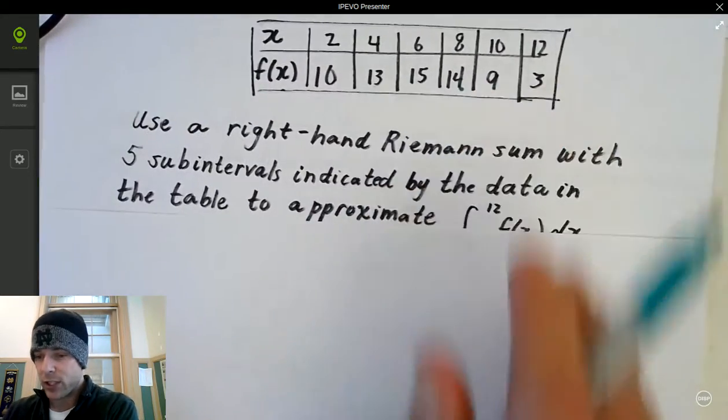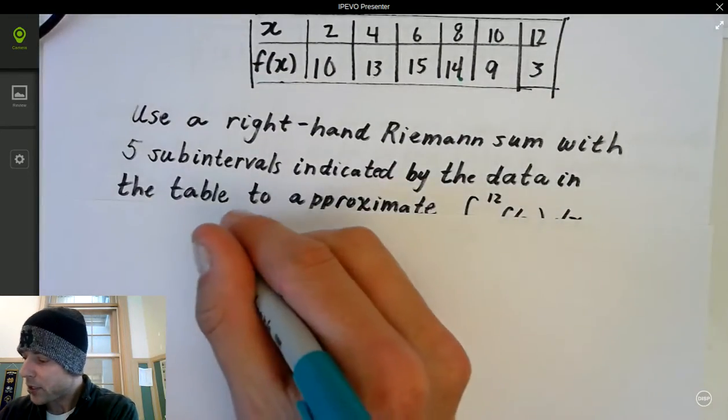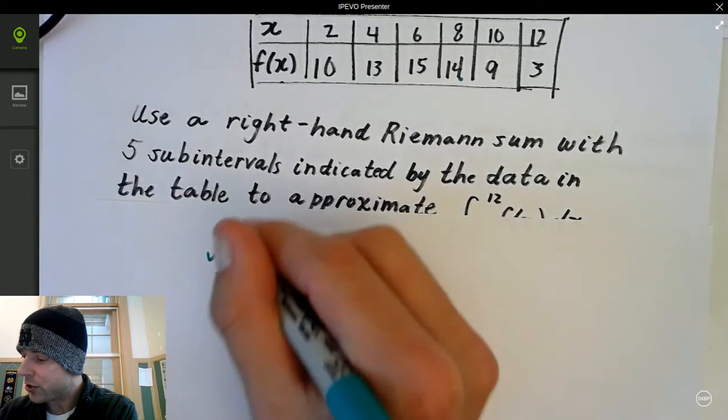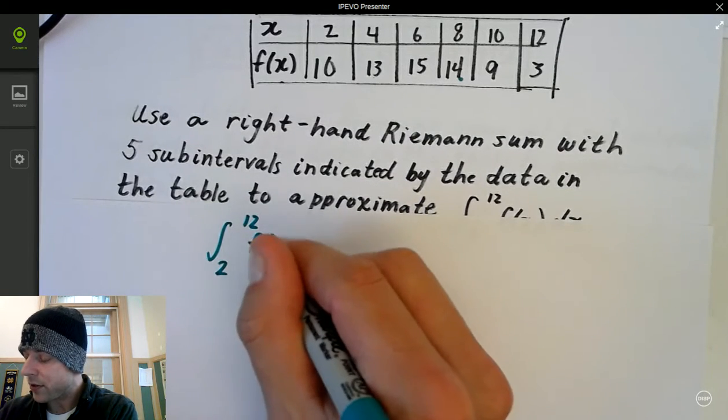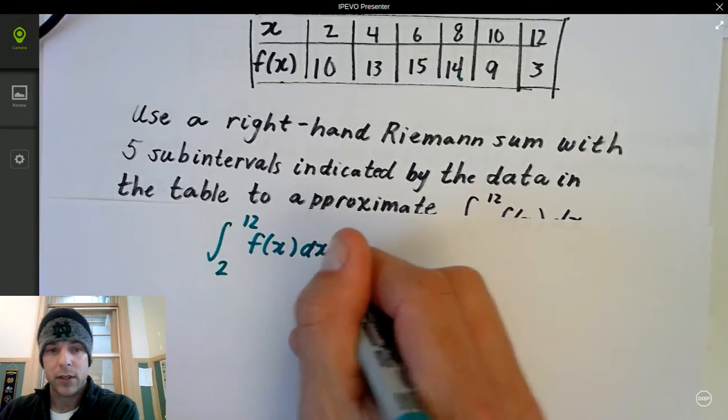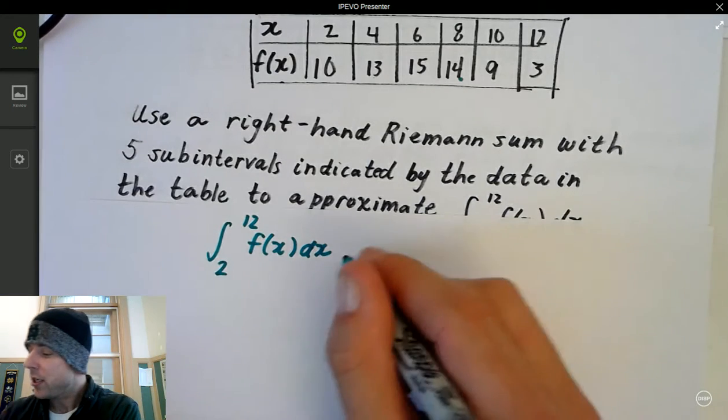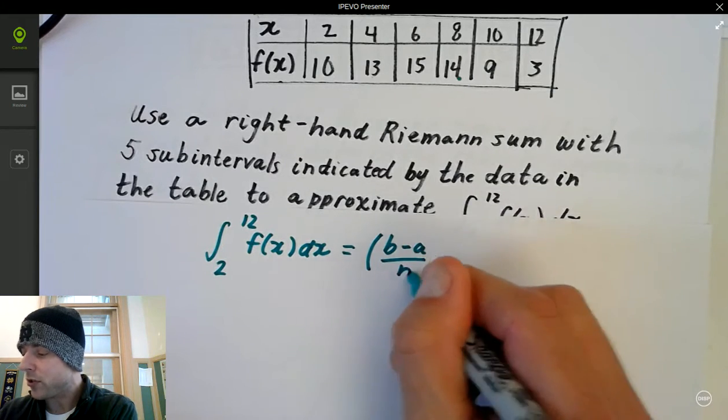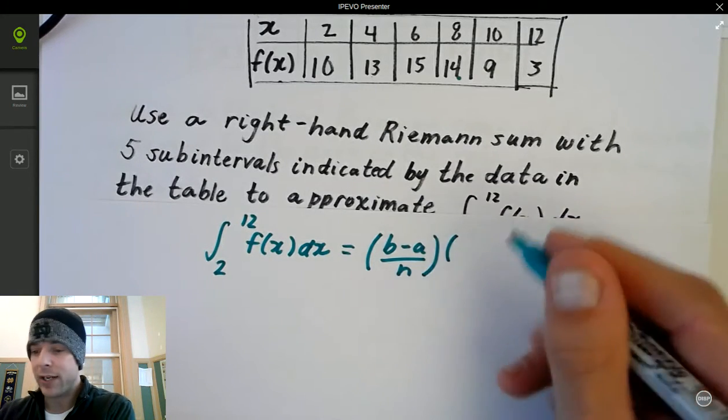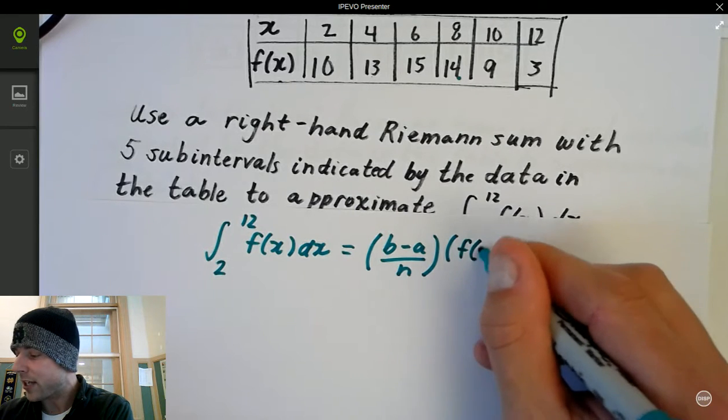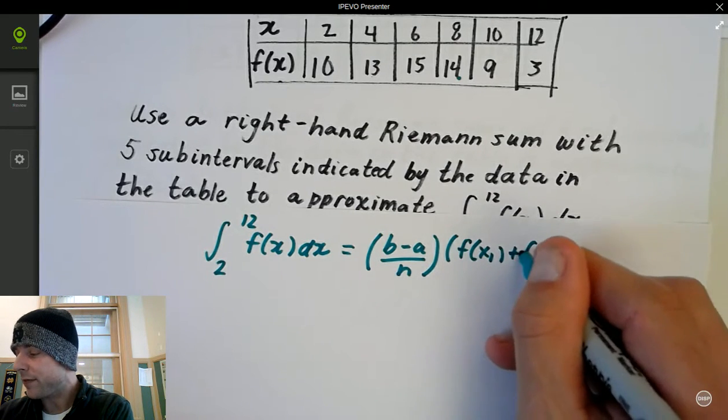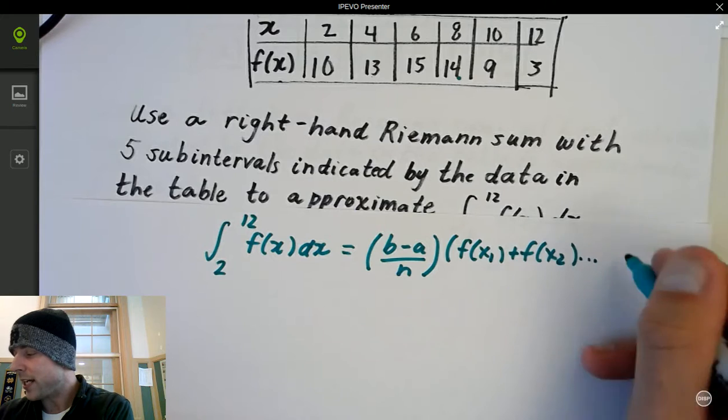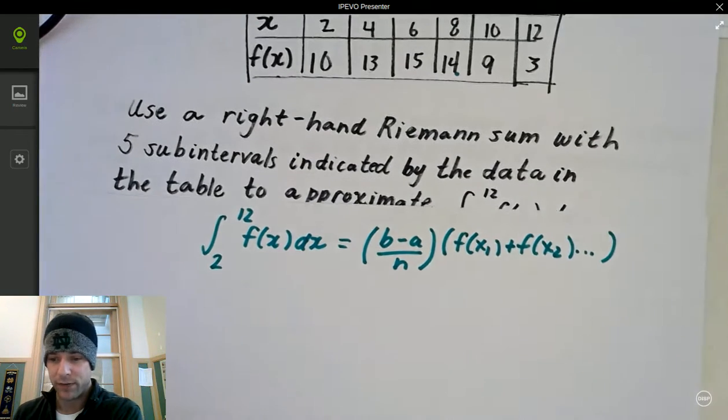So the formula for this is pretty simple. We're going to have from 2 to 12. That's our x's, for that whole table. And what we're going to do here is, it's going to be equal to (b - a) / n, which you can tell from the table, times your f(x₁) value plus f(x₂) all the way to the end. That's the general formula.